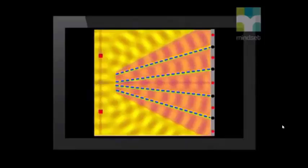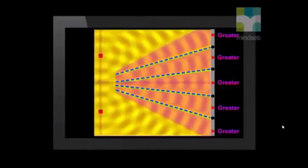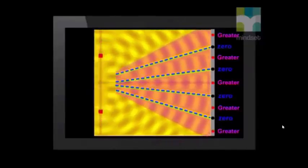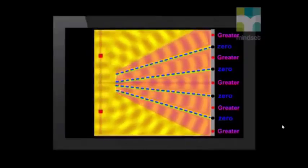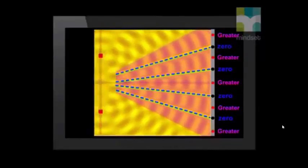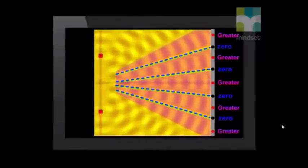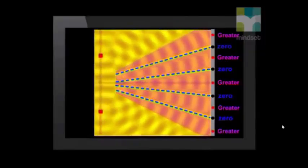As the waves travel forward and hit a screen, we can see these places with greater amplitude and zero amplitude. Even though we must use water waves to demonstrate interference like this, the pattern on the screen is like the pattern Young saw on his screen and so scientists feel that this is strong evidence that Huygens was correct. Light does travel as a wave.